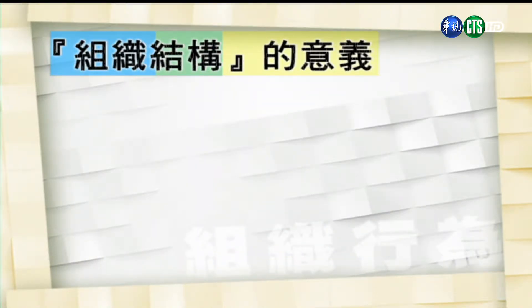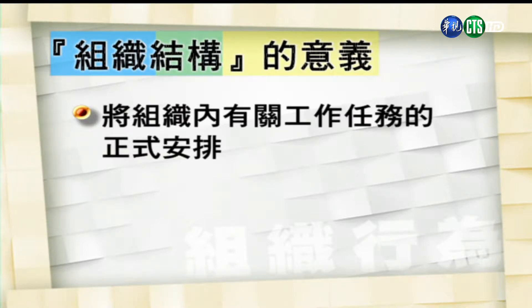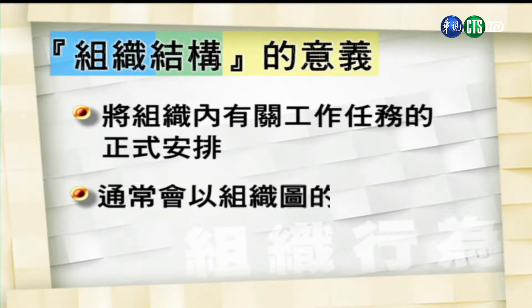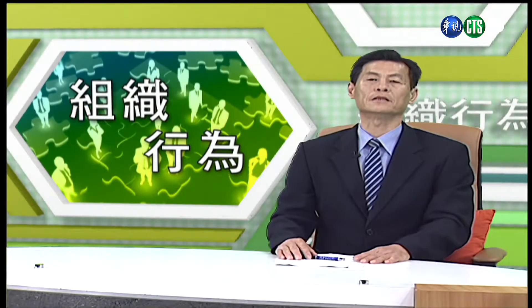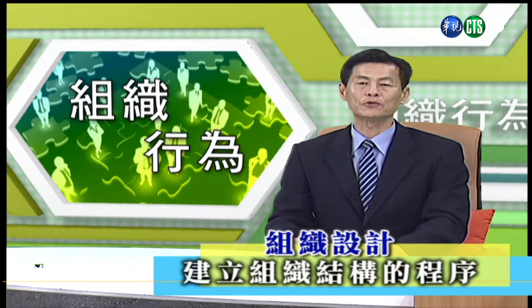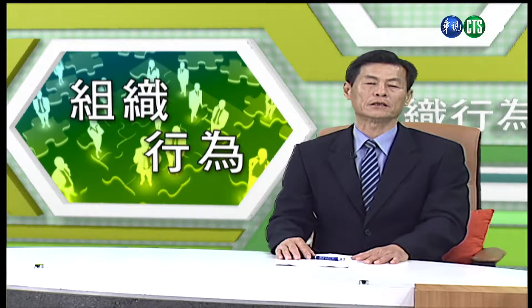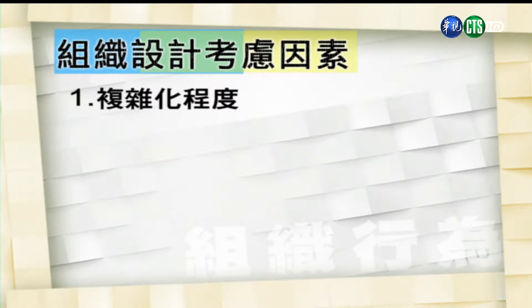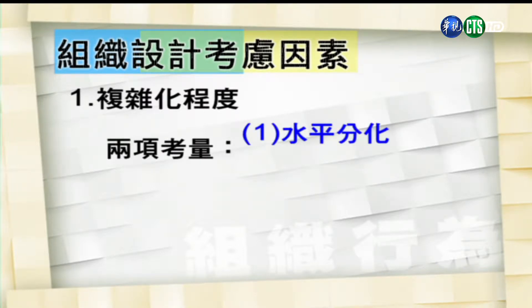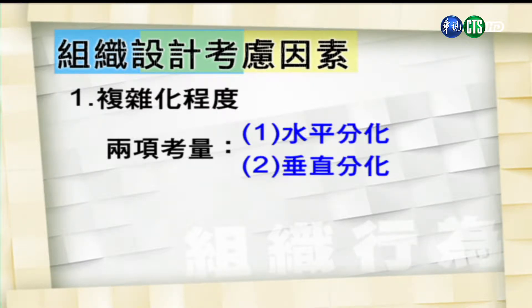首先，我们来探讨组织结构的意义。所谓组织结构是指将组织里相关的工作任务做一个正式的安排。通常组织的结构会用组织图的方式来呈现，而组织设计是指建立组织结构的程序。管理者在规划组织结构时，必须考虑以下几个因素。第一，组织结构的复杂化程度，是指组织分化的情形，包含水平分化（决定基层单位的多寡）和垂直分化（决定组织层级的多寡）。